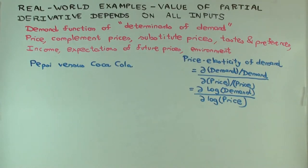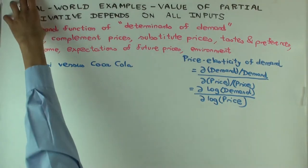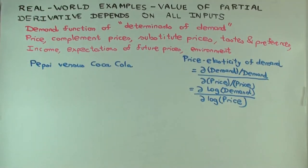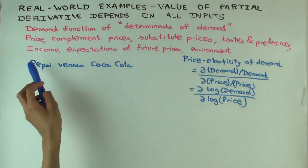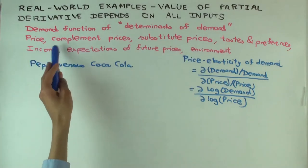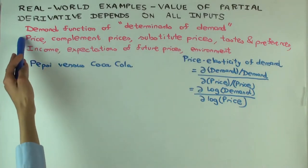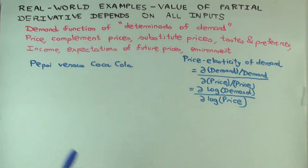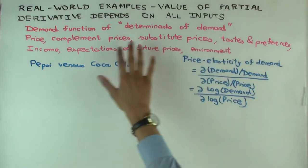I'm going to take an example of this based on the demand function. This is roughly a function that has a number of inputs and it looks at all those inputs and determines, based on those, what is the quantity demanded for a particular good by a particular individual or household. These are all the determinants of demand.